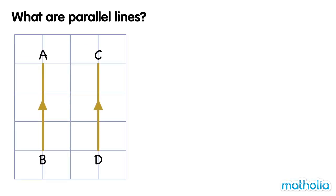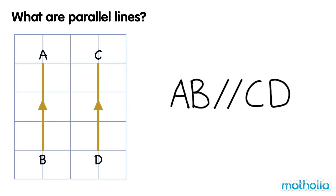Line AB and line CD are parallel. To show that lines are parallel, we write this symbol. So for the lines AB and CD, we can write AB is parallel to CD.